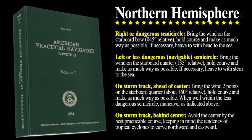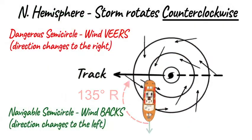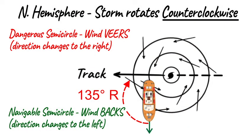Navigable semicircle: If the wind steadily backs or shifts to the left, the ship is most likely in the navigable semicircle. Thus, maneuver as necessary to keep the wind on the starboard quarter, about 135 degrees relative, and increase speed as much as possible. If you have to stop, face the stern of the ship into the seas.